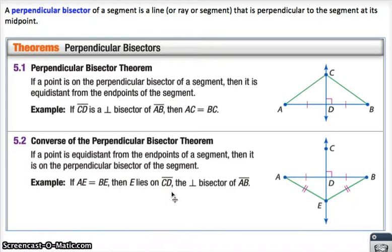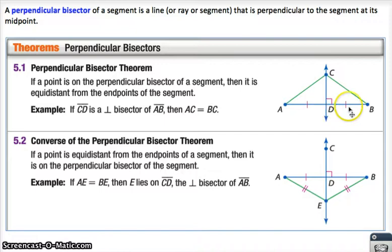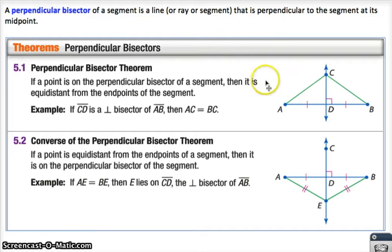So first thing is we've got to define some things, like perpendicular bisector. Perpendicular bisector we've done before, we've constructed it. A perpendicular bisector is a line that cuts through a segment — so you have to have a segment first — and then you cut that segment perfectly in half with a line that goes right through there. Not only does it hit the midpoint D, but it also has to cut it perfectly perpendicularly. So that's defined up here.